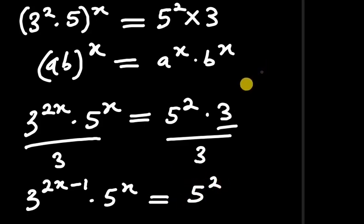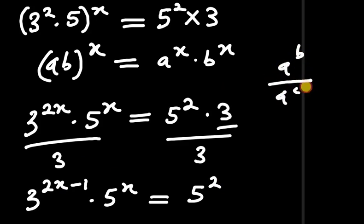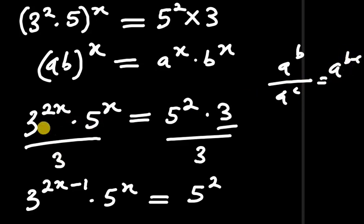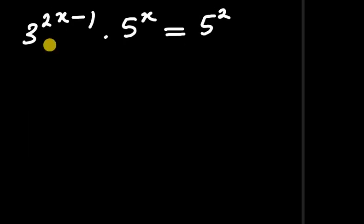To understand what we did: recall that a^b divided by a^c equals a^(b−c). We applied that here because we had a factor of 3 on both sides and subtracted the powers accordingly.